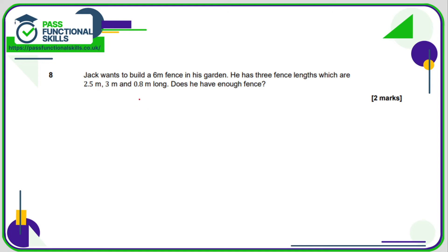Jack wants to build a six-meter fence. He's got fencing of 2.5, 3, and 0.8 meters. Using a calculator: 2.5 plus 3 plus 0.8 comes to 6.3 meters, which is greater than the six meters he needs — so yes, he definitely has enough fence.